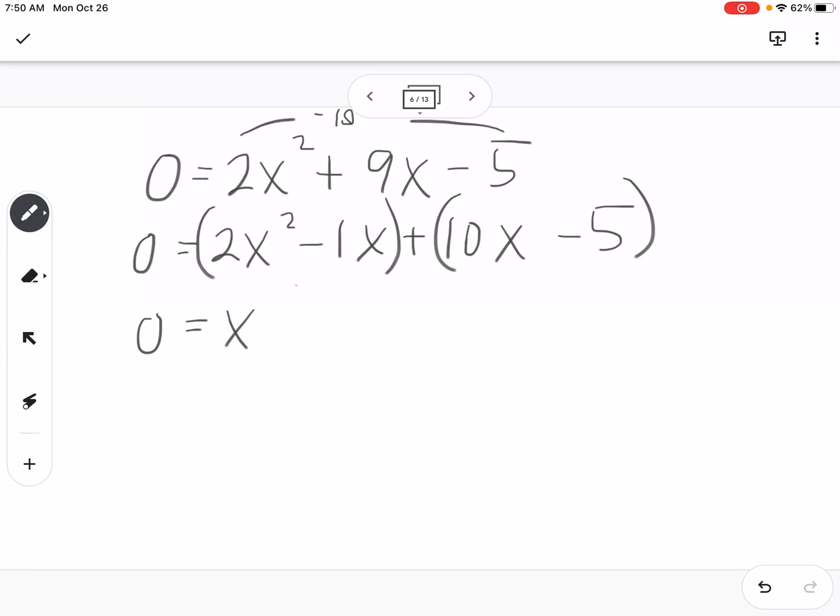We can take out an x, and we can take out a 5. So our factors would be x plus 5 and 2x minus 1. So then our zeros would be negative 5 and positive 1 half.